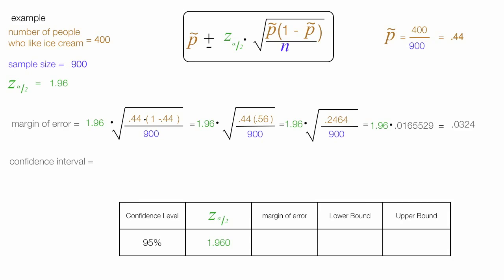This whole equation is called the confidence interval, and it's the proportion, 0.44, plus or minus the margin of error, which we know now. So the confidence interval is equal to 0.44, plus or minus 0.0324.